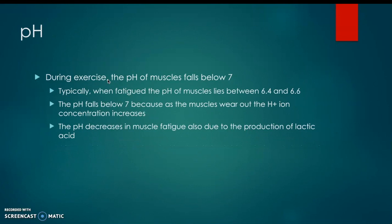Regarding pH in the muscles: the basic human body and muscles usually start at a pH level of 7 — that's the equilibrium and the norm. But when you're fatigued, the pH drops to about 6.4 or 6.6, because the muscles are wearing out as the H+ ion concentration increases, becoming more acidic with the introduction of lactic acid.